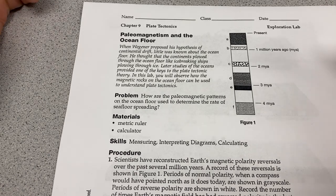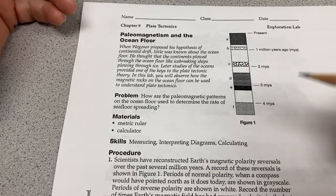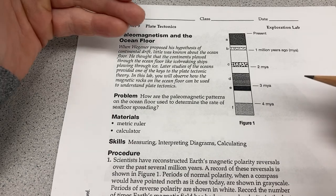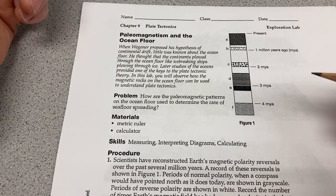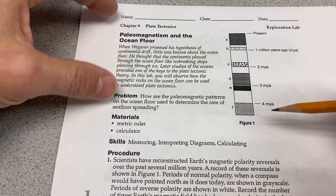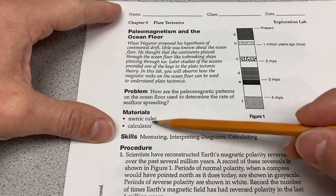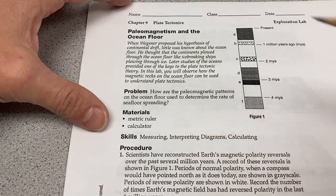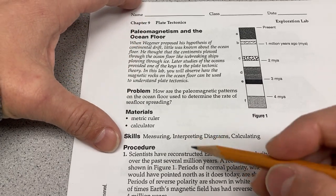Going one direction, we saw an exact replicated pattern of stripes going from normal polarity to reverse polarity to normal polarity. Going the other direction from the mid-Atlantic ridge, we saw exactly the same repeating pattern. You're going to need a ruler and a calculator to pull this off — you can use a calculator on your phone, but you'll need a metric ruler as well, or at least something to measure with, even the corner of a piece of paper.